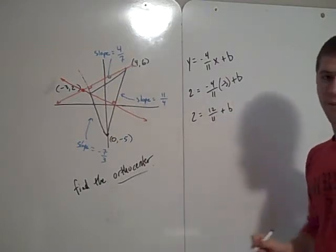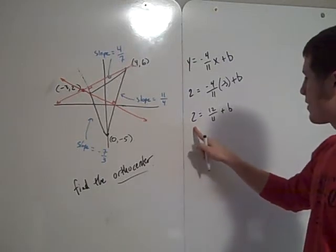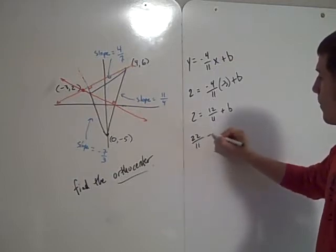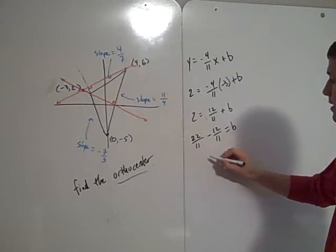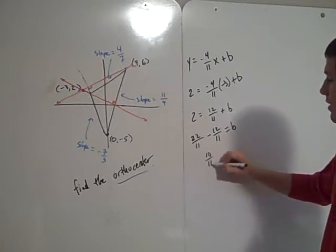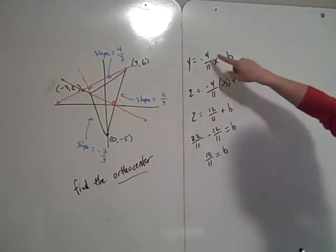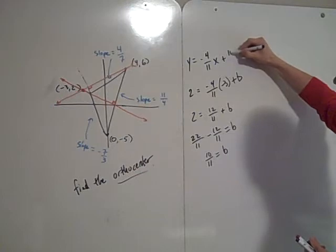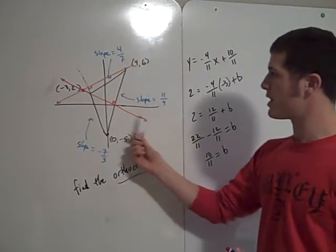Subtract 12 elevenths from both sides. We recognize that 2 is actually 22 elevenths. So 22 elevenths, which is 2, minus 12 elevenths equals B. And thus 10 elevenths equals B. So my equation is y equals negative 4 over 11x plus 10 elevenths. That's the equation of this line.